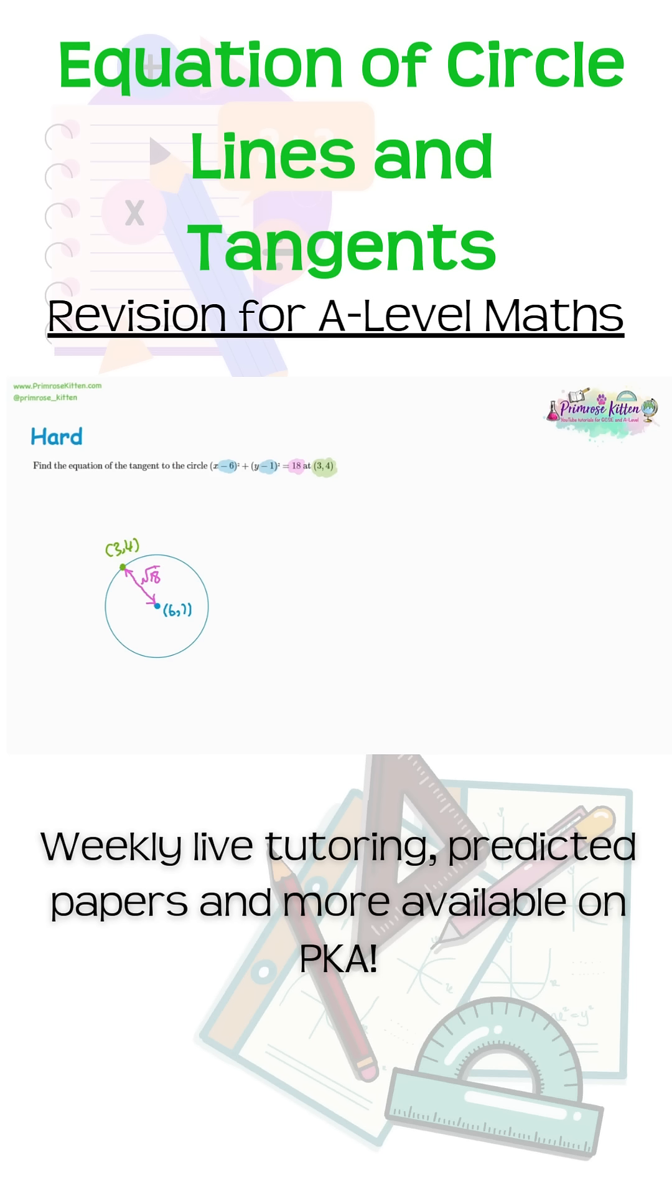Now what the tangent to the circle means is it's going to be a straight line that just touches the circle at 3, 4.